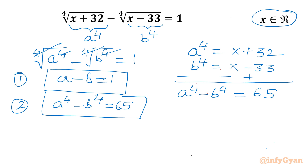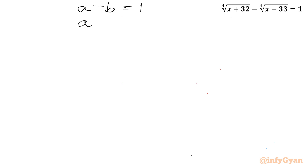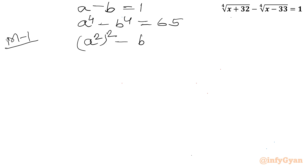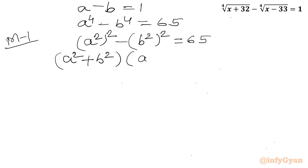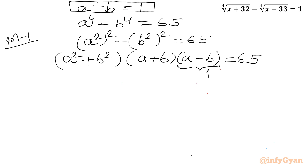Considering the two equations together — a - b = 1 and a⁴ - b⁴ = 65 — we use Method 1. We rewrite a⁴ - b⁴ as (a²)² - (b²)², applying the difference of two squares: (a² + b²)(a² - b²) = 65. Applying difference of squares again to (a² - b²), and using equation 1, we get (a² + b²)(a + b)(a - b) = 65, so (a² + b²)(a + b) = 65.